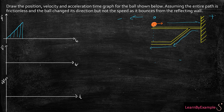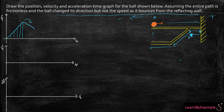When it hits the wall, the question mentions that it changes its direction but not its speed as it bounces from a reflecting wall. So the velocity magnitude is going to stay the same; however, it's going to start moving in the negative direction. My position is going to have a negative value — it's going to start going this way. All the way from here to here it's going towards the negative direction, but with respect to zero I'm still at a positive position, just moving toward negative.